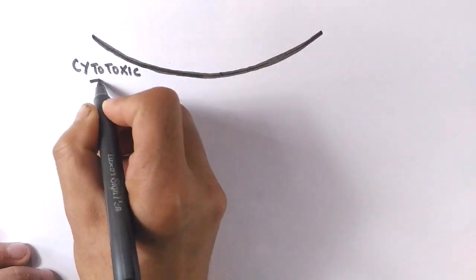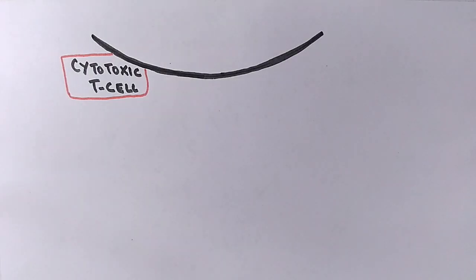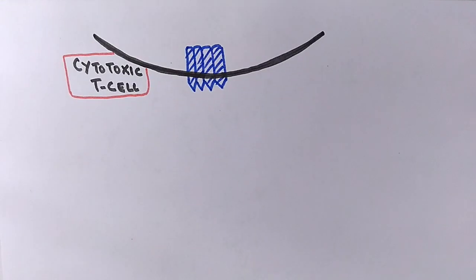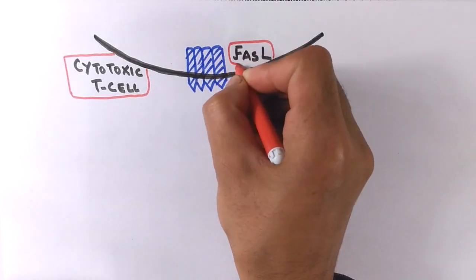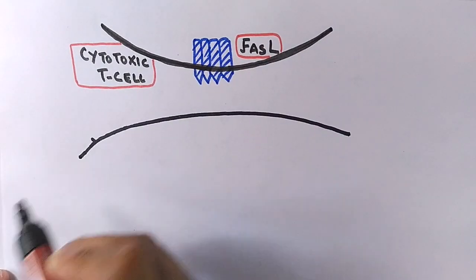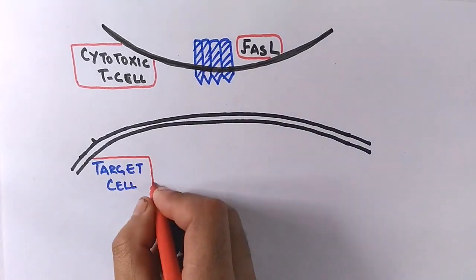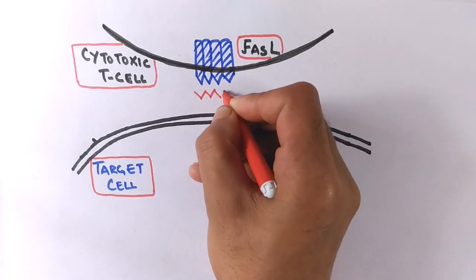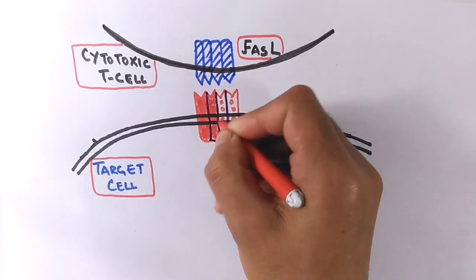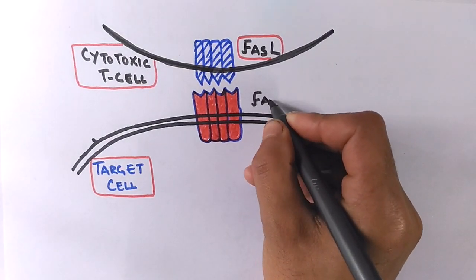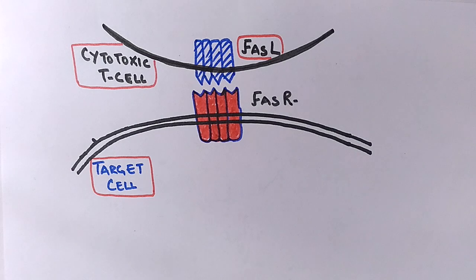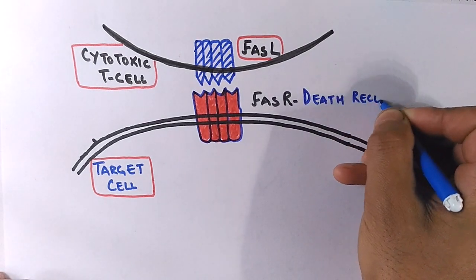Diagrammatically we can see we have cytotoxic T cell, and to that very cell there is a bound FAS ligand which is a signaling protein in apoptosis. While on the other hand we have a target cell which needs to be eliminated via apoptosis, and to that cell there is a FAS receptor on its membrane, sometimes also called apoptosis antigen 1, and this FAS receptor acts as a death receptor.